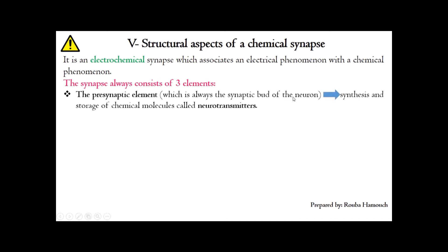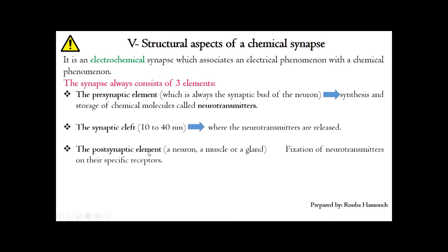The pre-synaptic element is always a neuron that emits the message; in this neuron we have the synthesis and storage of chemical molecules or neurotransmitters. We also have the post-synaptic element, which receives the message from the pre-synaptic element. The post-synaptic element can be a neuron, a muscle, or a gland, and on the membrane of the post-synaptic element we find specific receptors on which the neurotransmitters bind after being released in the synaptic cleft.